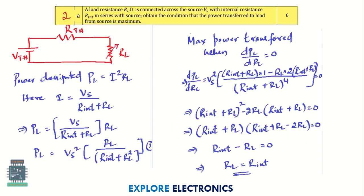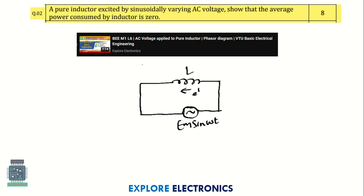In question 2A, we need to obtain the condition for maximum power transfer to a load from the source. We need to derive this — it is for six marks. You need to write the explanation as well so that it gives full marks. The next question is on a pure inductor.